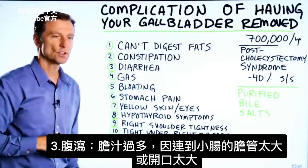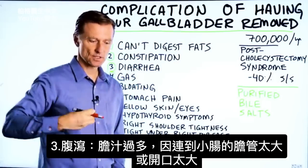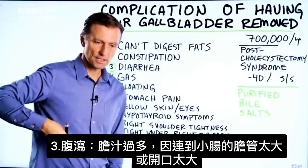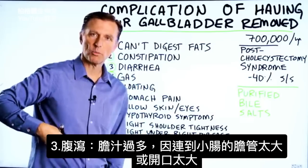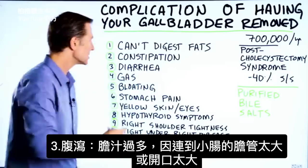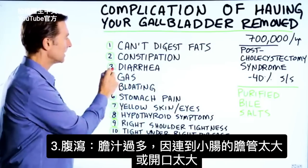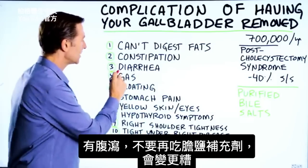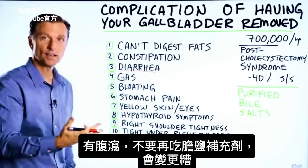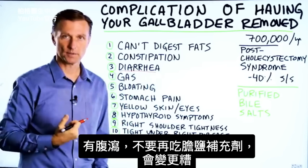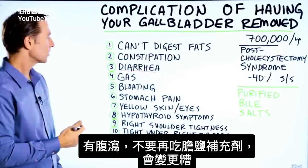But if you have too much bile — because maybe the duct is too large or the opening is too large — you can get the opposite: diarrhea. If you have diarrhea, you don't want to take more bile, even as a supplement, because that's going to make it worse.